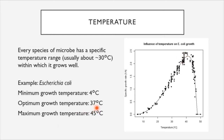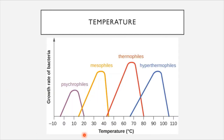This 37 degrees Celsius is human body temperature. It is pretty typical to find bacteria that have an optimal growth temperature corresponding to a host organism they live inside. E. coli is a bacterium that lives in the intestines, and therefore its optimal growth temperature of 37 degrees Celsius makes sense. E. coli would be considered something called a mesophile — a bacterium that has an optimal growth temperature range somewhere in the range of human body temperature.